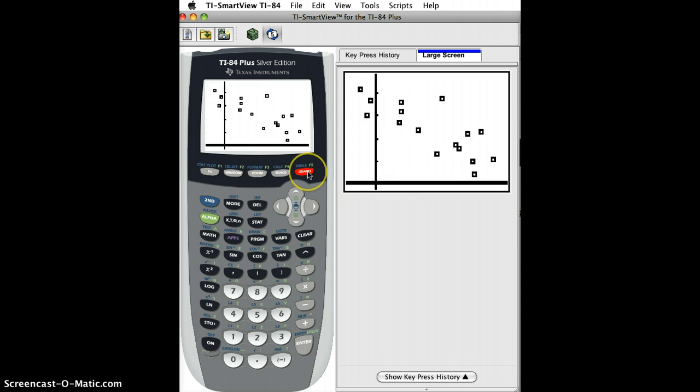So let's just click graph. And if it didn't fill the window, I would remember to do zoom nine first to try to get it to fit into the window. So it looks good here. My least squares regression line should be a line that kind of goes through like this. So how do we do that?